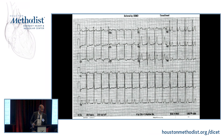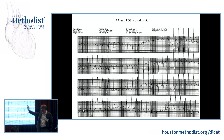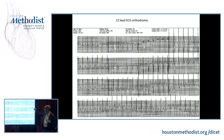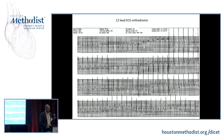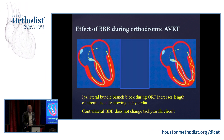When we go into SVT, the delta wave goes away. In this case, the patient had a little bit of right bundle branch block, but the QRS becomes narrower than in sinus rhythm, which is consistent with orthodromic tachycardia.